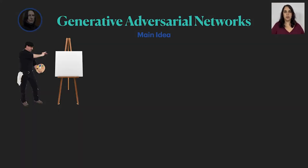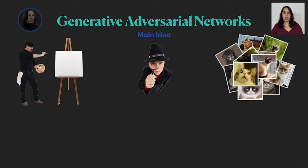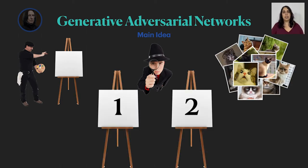GANs have two competing components. The first is the generator which is like the artist we have seen before trying to generate images of cats. His adversary the discriminator is like an art critic. He has a bunch of real images of cats and given two images he needs to determine which one is real and which one was generated by the artist.